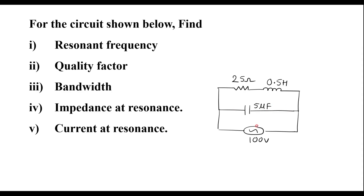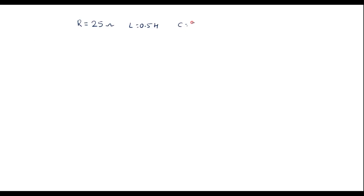This is the given parallel resonant circuit and we need to calculate all these parameters. The given data are: R is equal to 25 ohm, L is equal to 0.5 henry, C is equal to 5 micro farad (5 × 10⁻⁶ F), and supply voltage V is equal to 100 V.